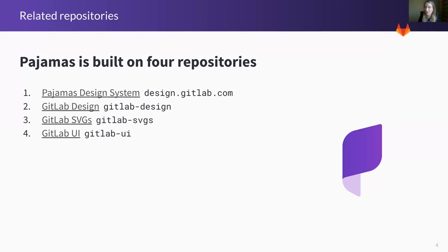Let's take a look at what makes up our design system behind the scenes. We have four repositories or projects that all relate to the system: the Pajamas design system, the GitLab design repository, GitLab SVGs, and GitLab UI. I'll walk through what each of these are and how they relate to each other.